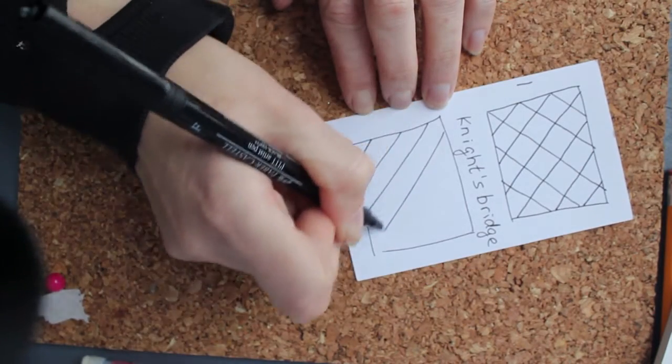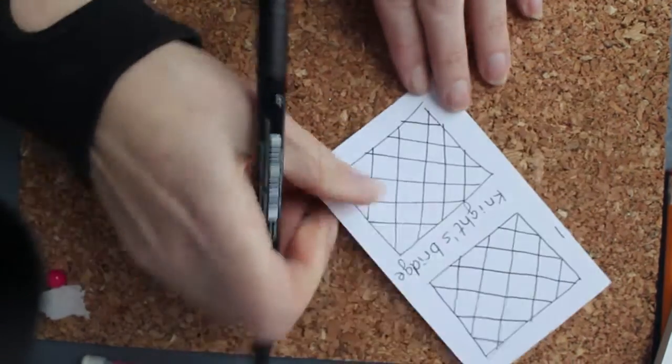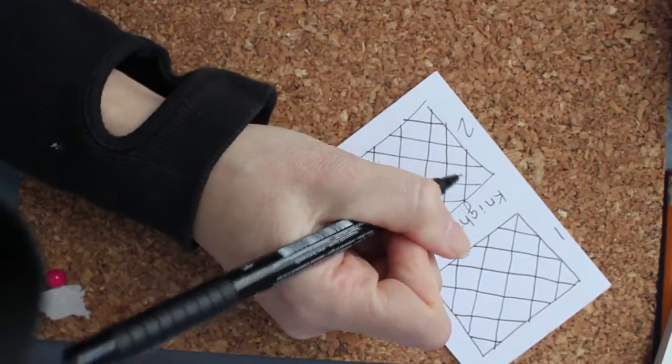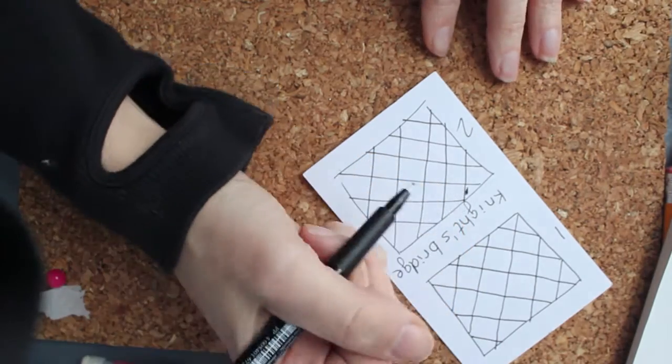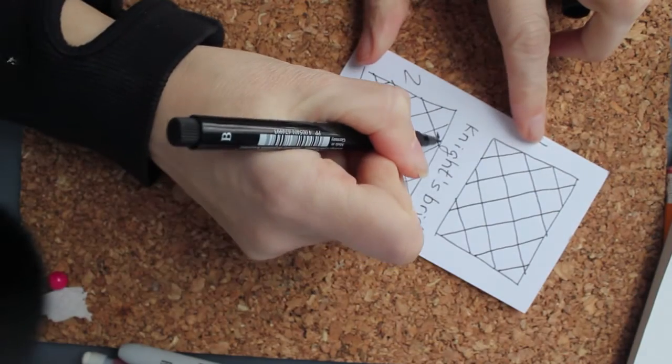And then step two, when you have those crisscrossing lines, you're going to start coloring them in. Now, I have a better marker for this. Let me go get that. I'll be right back. Okay, I like this marker better.